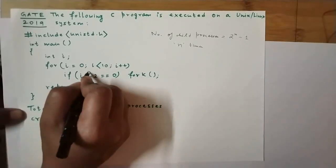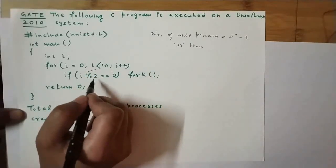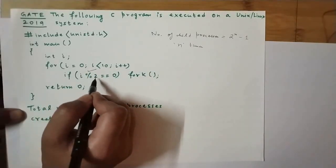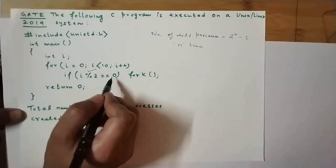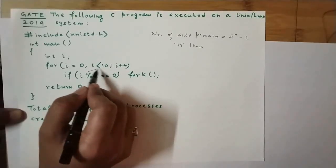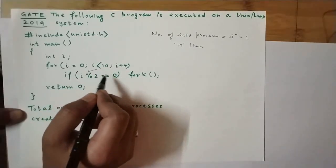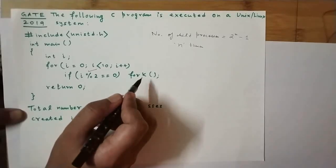The mod is the remainder operator. So on dividing the value of i by 2, if we get a remainder of 0, it means that i is an even number. And if this condition is satisfied, then the fork system call is executed.